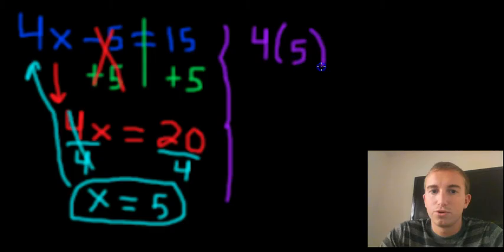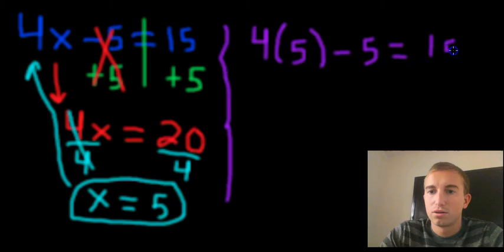Once we write that out, we can then use the order of operations. So we will be 4 times 5, which will give us 20. Once we get that answer, we will then bring everything else down right below it. So we will get 20 minus 5 will give us 15. And then one last step. We want to make sure that we have the same value on each side of the equation. So 20 minus 5 will give us 15. And in this case, 15 equals 15. So once again, we double checked our answer and we prove that we solved it correctly, x is equal to 5.